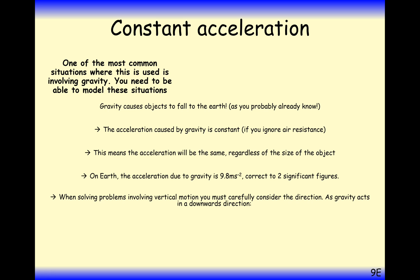When solving problems involving vertical motion, you must be careful to consider direction. Gravity is always going to be acting downwards. So if your particle is being projected upwards and gravity is downwards, then that's effectively a negative acceleration. An object thrown downwards will also accelerate at 9.8 metres per second squared — gravity doesn't only slow objects thrown upwards, it also accelerates objects going downwards.